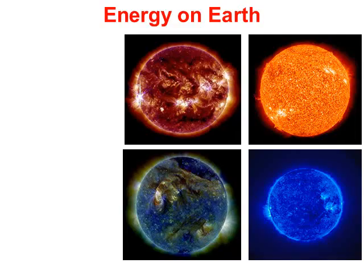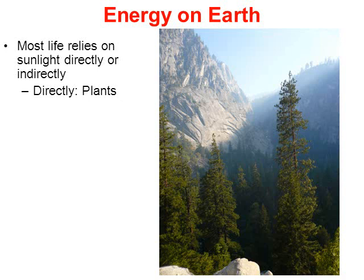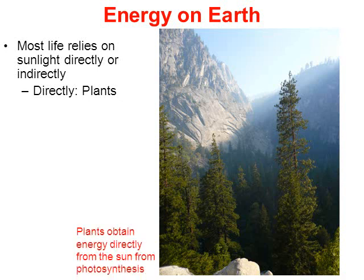To wrap up this video, when we look at energy on Earth, it really starts with the sun. Most life on Earth relies directly or indirectly on the sun — though there is a peculiar group of creatures in the deepest parts of the ocean that are an exception. Organisms that directly rely on the sun for energy are autotrophs, such as plants. Plants obtain energy directly from the sun by doing photosynthesis, as do some cyanobacteria, photosynthetic bacteria, and algae.